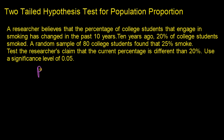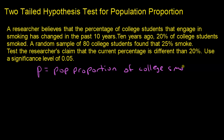First, let me define P, the population proportion — specifically, the population proportion of college smokers. What I'm building a hypothesis test for is whether or not P, the population proportion, is equal to 20%. The null hypothesis will always have the equal sign, so H₀: P equals 20%.